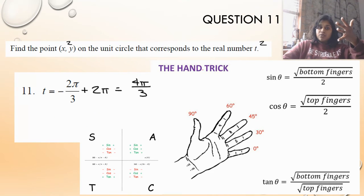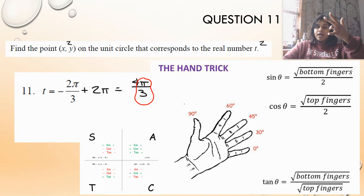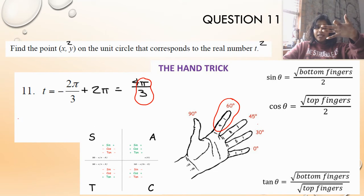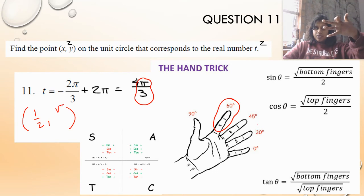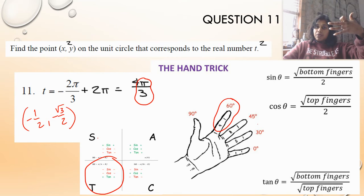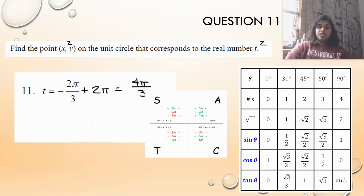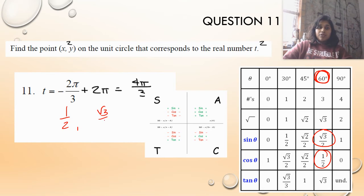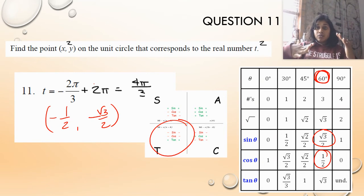With the hand trick, I deal with just the base π over 3, which is 60 degrees — that's my pointer finger. I write my x as square root of 1 over 2 and my y as square root of 3 over 2. Then from ASTC, 4π over 3 is in quadrant 3, so x and y must both be negative. For the chart trick, I come over to π over 3 (60 degrees), write my x and y — 1 half and square root of 3 over 2 — then apply quadrant 3: both negative. No matter which trick you choose, they're all easy enough.